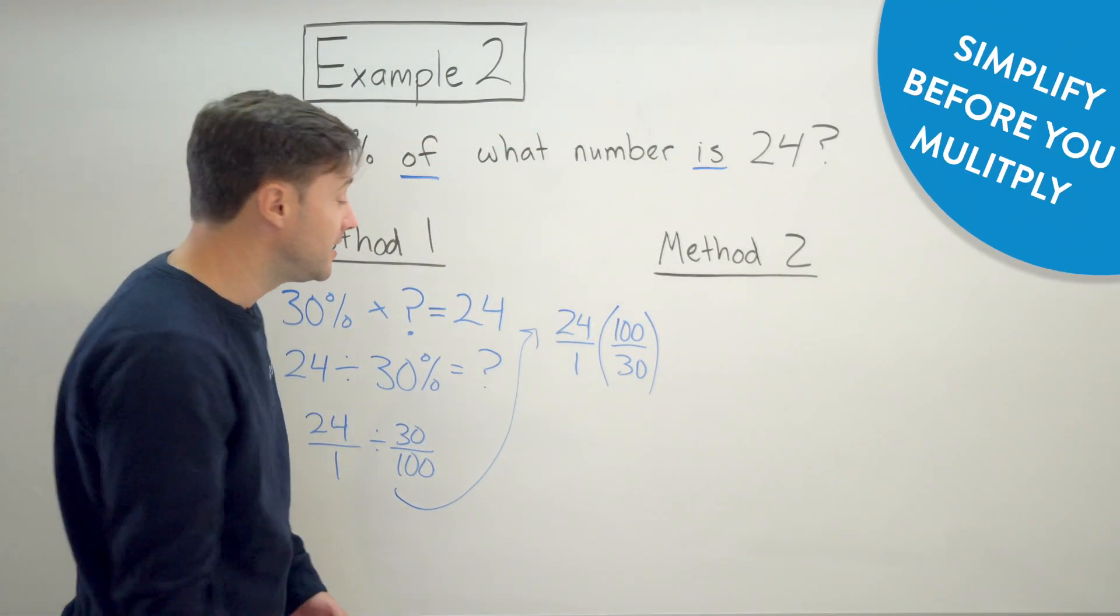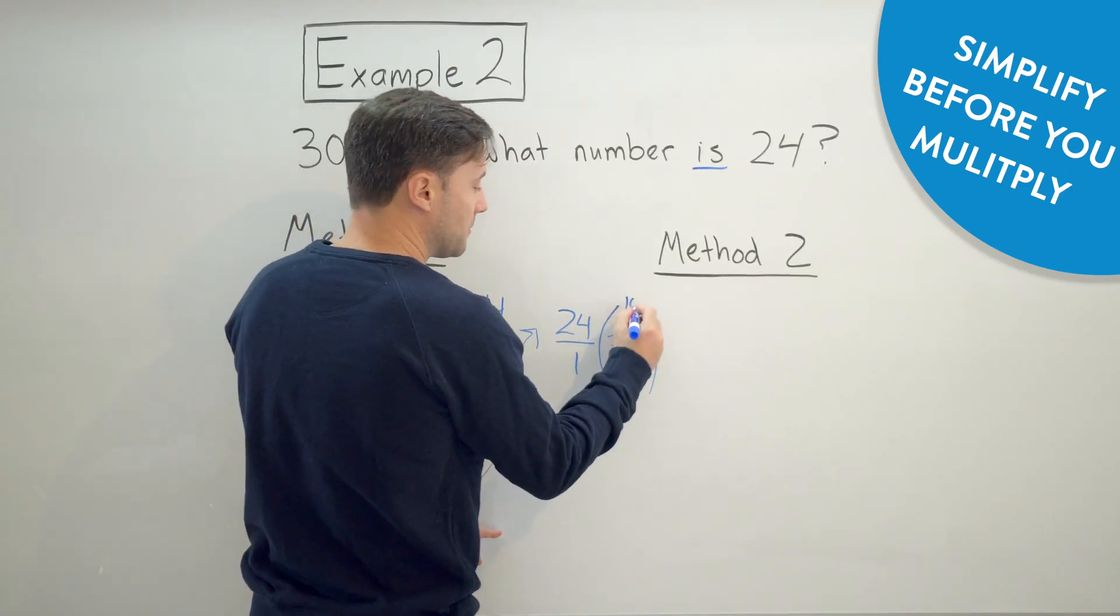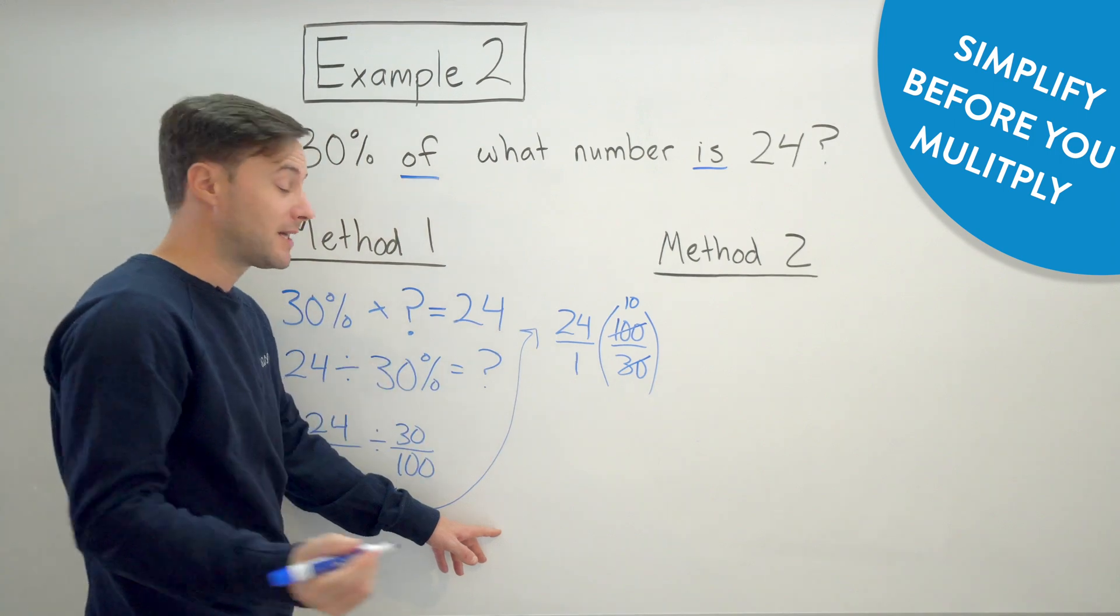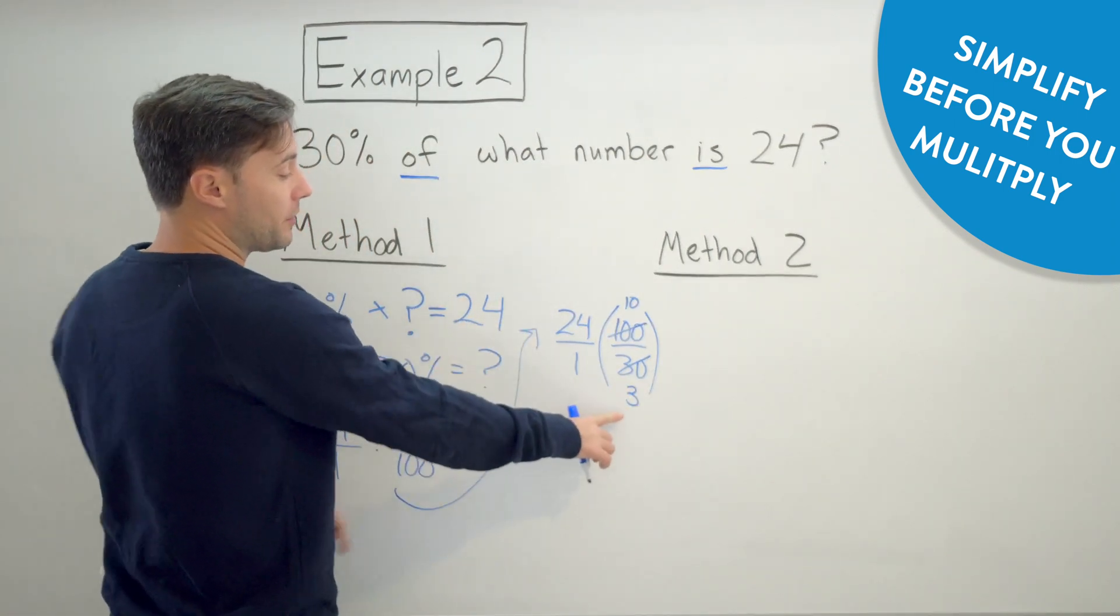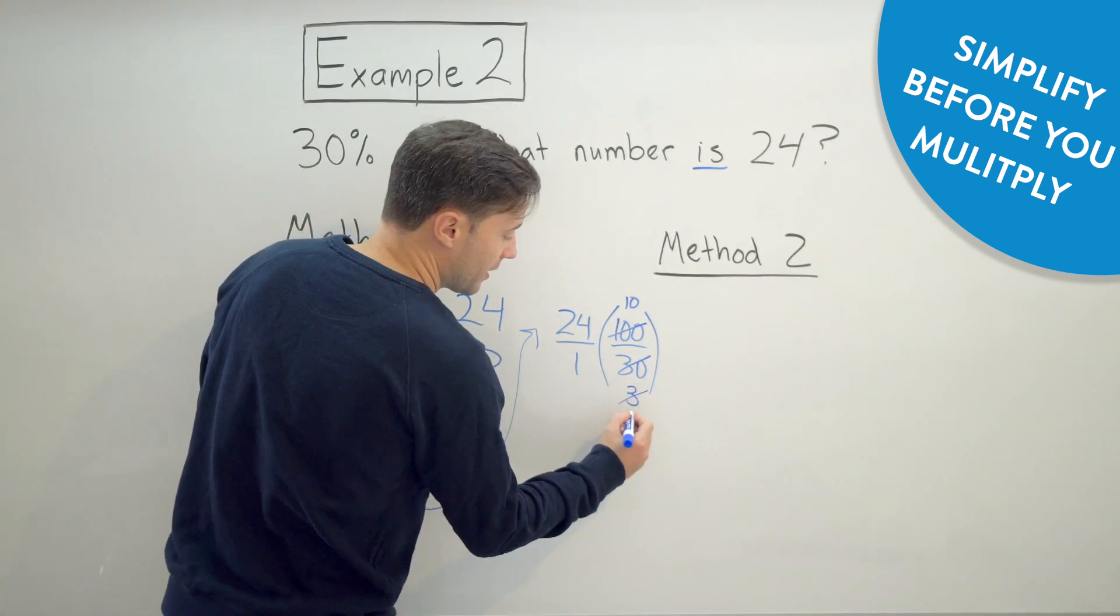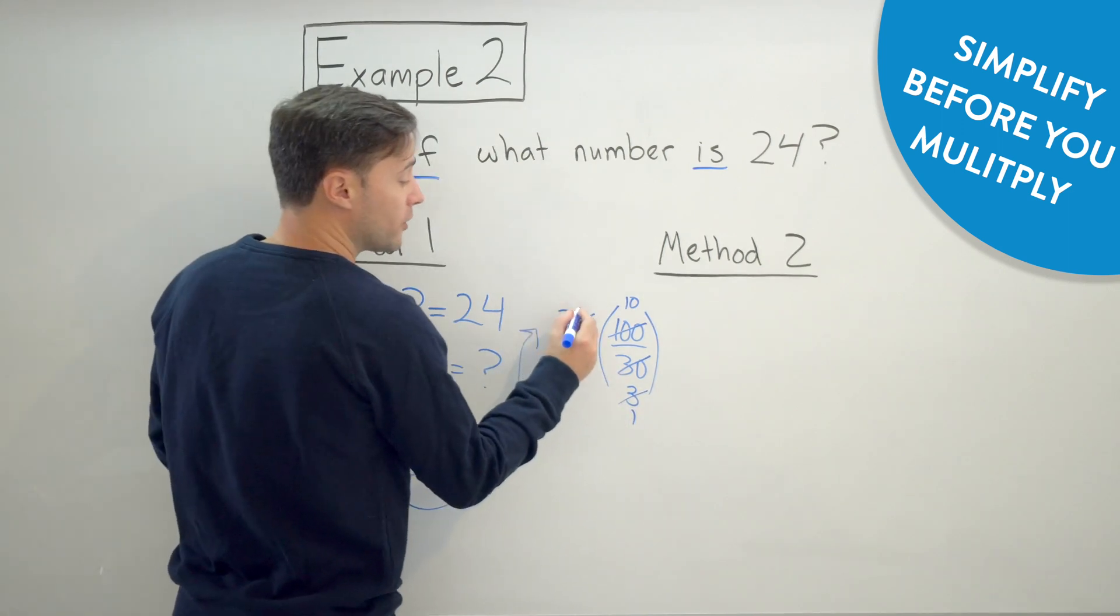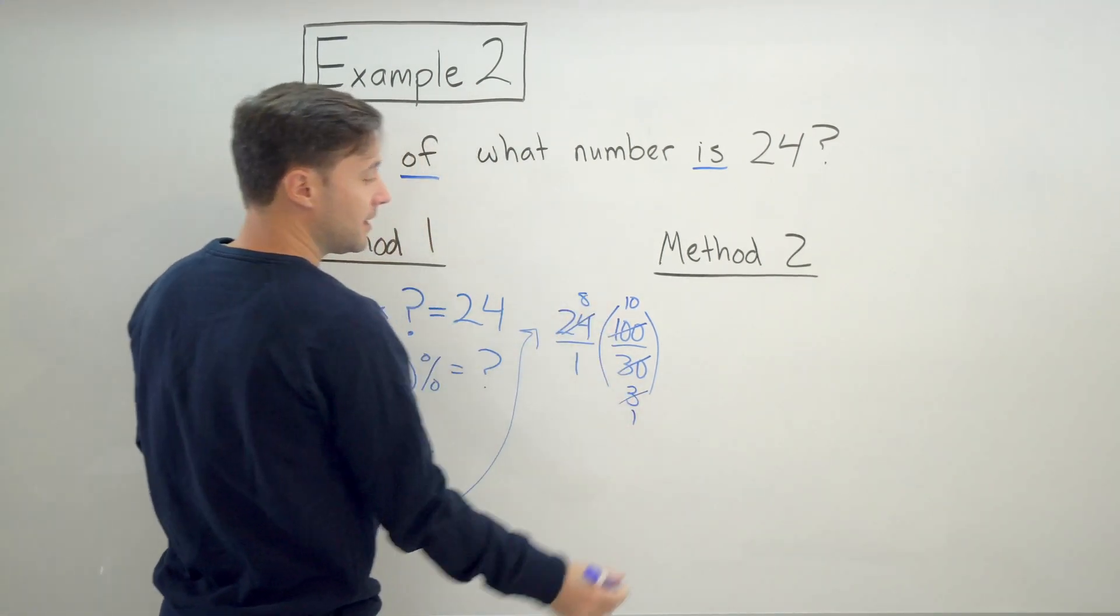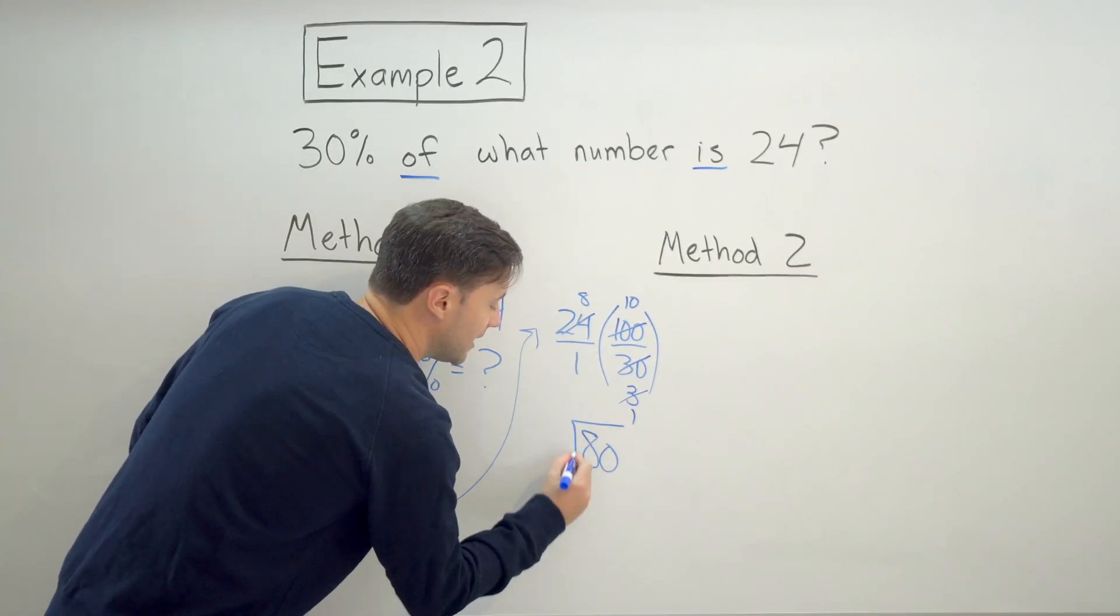100 over 30, I could easily simplify both by 10. So 100 divided by 10 becomes 10. 30 divided by 10 becomes 3. And then I can also simplify here. The 3 and 24 have a common factor of 3. So 3 divided by 3 is 1. 24 divided by 3 is 8. And 8 times 10, very simple, is 80.